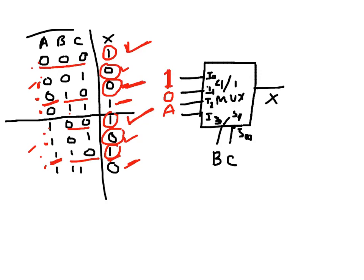For the last input I3, where BC is 1-1, the output changes: it's 1 when A is 0, and 0 when A is 1. That means the output is the inverse of A, so I apply A-bar at I3. To summarize the circuit: I0 = 1, I1 = 0, I2 = A, and I3 = A-bar, which will give the correct outputs per the truth table.